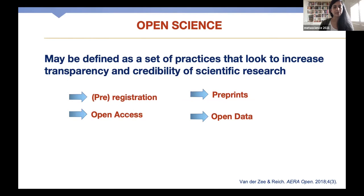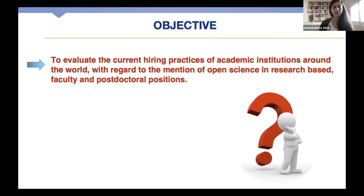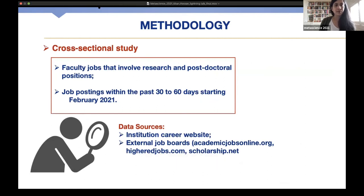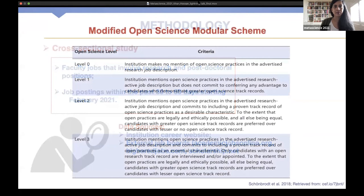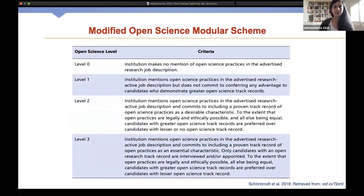To promote this culture shift, we have to get a sense of where institutions stand in terms of adopting open science practices when it comes to hiring faculty. The purpose of this study was to evaluate the current hiring practices of academic institutions around the world with regard to the mention of open science in research-based faculty and post-doctoral positions. We conducted a cross-sectional study of 192 institutions globally, gathering job postings for the past 30 to 60 days starting in February 2021. Our search strategy included obtaining job postings from institutions' career websites as well as any viable internal job boards. Job postings were assessed by the modified Open Science Modular Scheme — a self-certification scheme modeled off the Transparency, Openness, and Promotion guidelines.